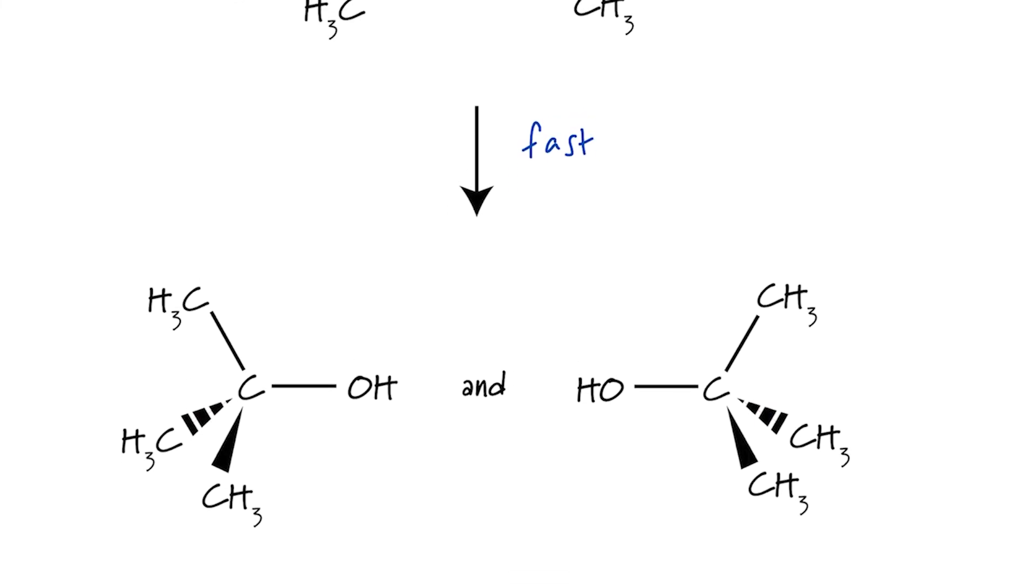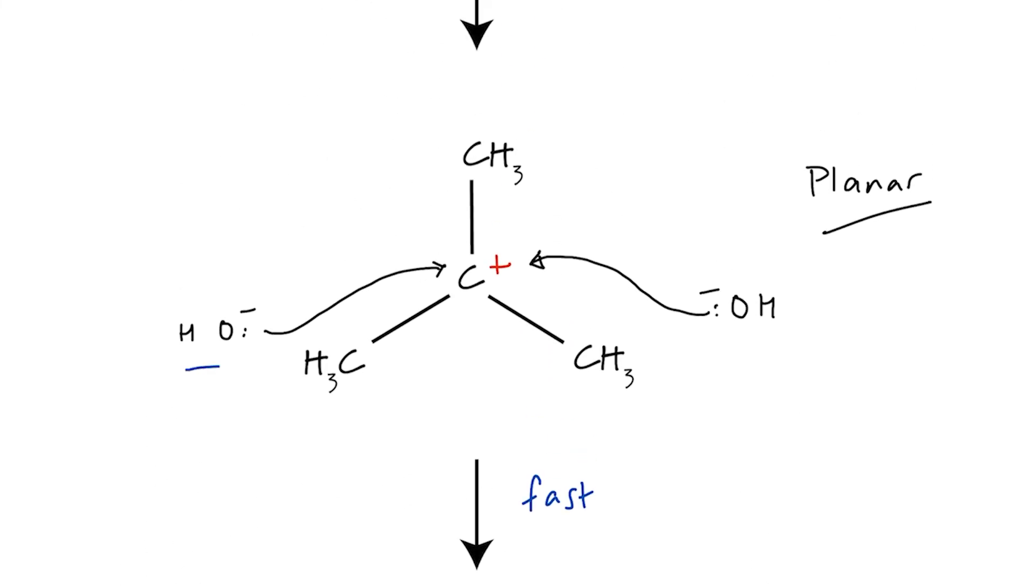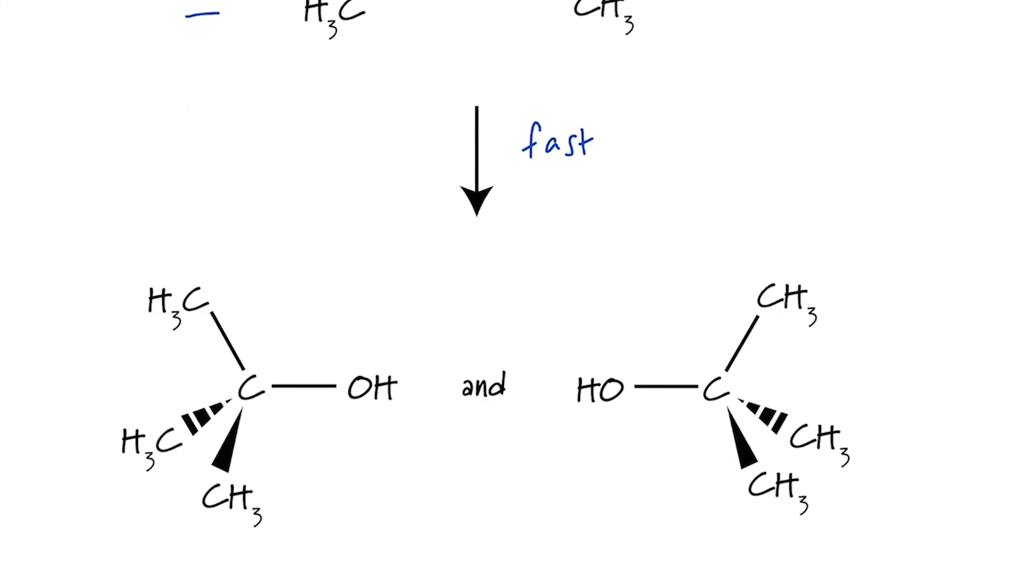And as you can see, we've got two possible products in terms of geometry, depending on whether the nucleophile originally attacked from the left or from the right. Now, in this case, in the example I've given here, both of these product molecules are identical. However, if these three alkyl groups were different, say a methyl, an ethyl and a propyl, then my central carbon atom would be chiral, and the two product molecules would be optical isomers or enantiomers. So understanding that the side of attack affects the geometry of the product is really only important if the carbon atom is chiral.